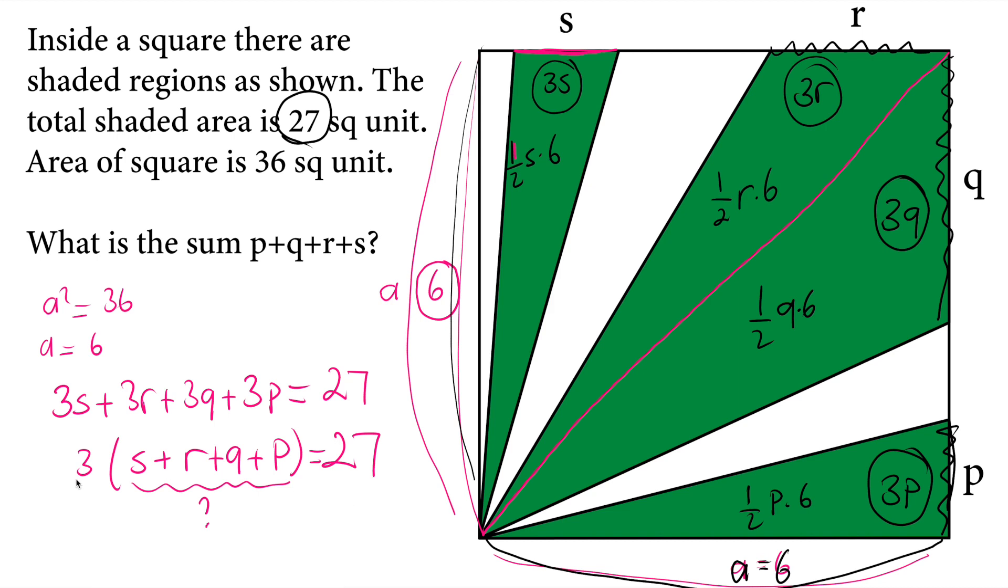27 will be equal to, if we divide each side by 3, that sum S plus R plus Q plus P will be equal to 9. So this is our solution.